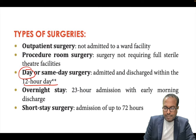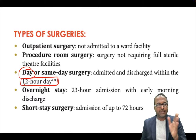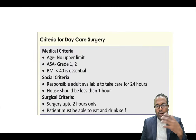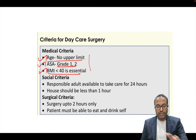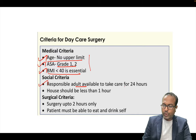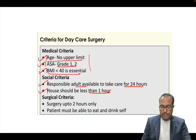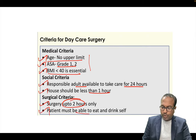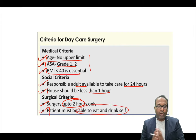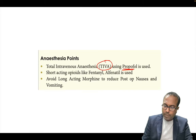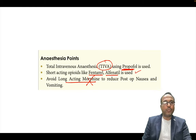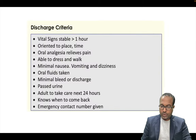Old discharge criteria for daycare surgery: vital signs stable for 1 hour, oriented to place and time, oral analgesics relieve pain, able to walk, minimal nausea/vomiting/dizziness, oral fluids taken, minimal bleeding, passed urine, adult available for 24-hour care. Anesthesia used: IV anesthesia with propofol, avoid long-acting morphine, use short-acting fentanyl and alfentanil.